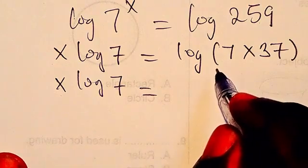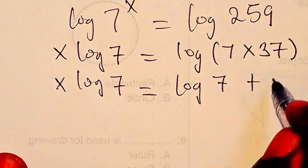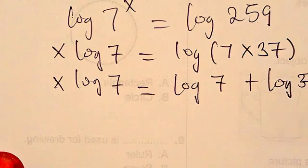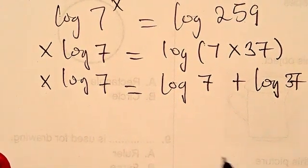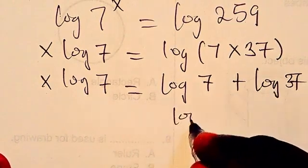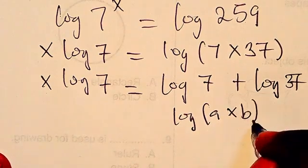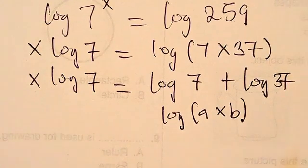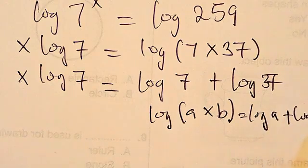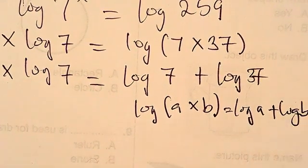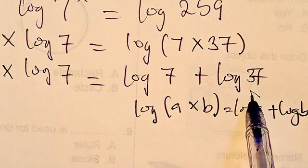Here I can rewrite this as log 7 plus log 37. That is from the law of logarithm. If you have log a multiplied by b, we're going to have this to be log a plus log b. Right, so that is what we have, log a plus log b. So now we have it in this form.